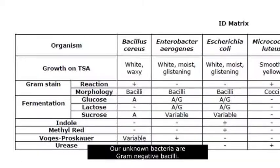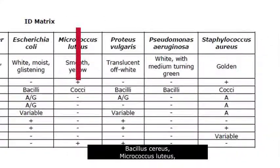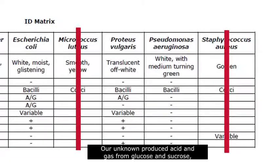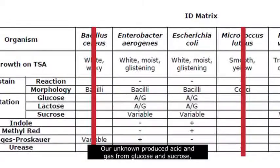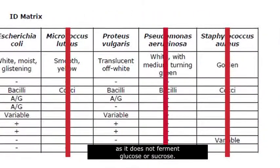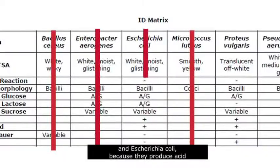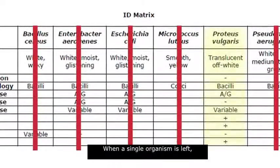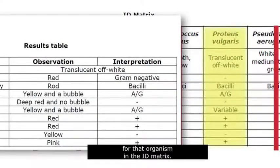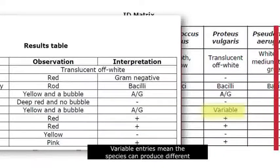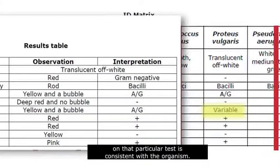Our unknown bacteria are gram-negative bacilli, so we can eliminate the gram-positive species Bacillus cereus, Micrococcus luteus, and Staphylococcus aureus. Our unknown produced acid and gas from glucose and sucrose, but was negative for fermentation of lactose. We can eliminate Pseudomonas aeruginosa, as it does not ferment glucose or sucrose. And we can eliminate Enterobacter aerogenes and Escherichia coli, because they produce acid and gas from lactose. When a single organism is left, verify that the results match the remaining tests for that organism in the ID matrix. Variable entries mean the species can produce different results depending on the specific strain — any result on that particular test is consistent with the organism.